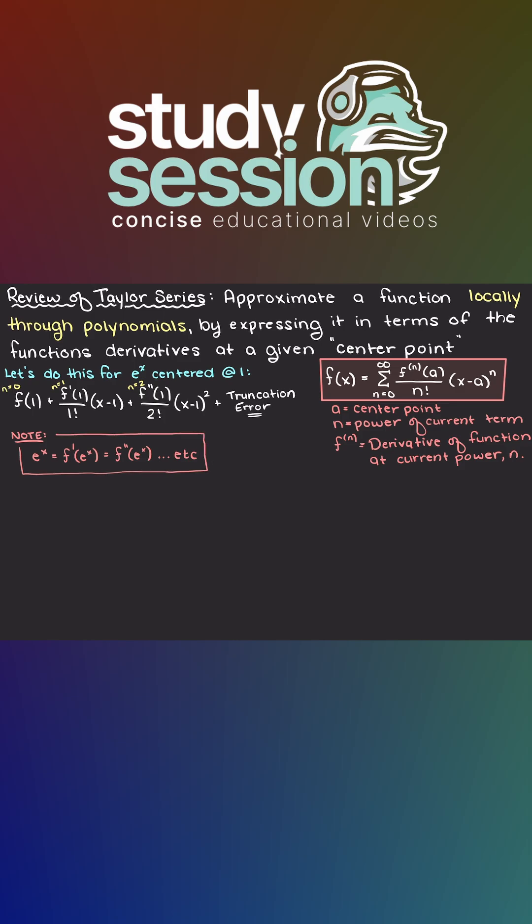Simplifying our Taylor series, we get the following equation. Let's plot our actual e to the x function and then the first and second order Taylor series approximations at a center point of 1.